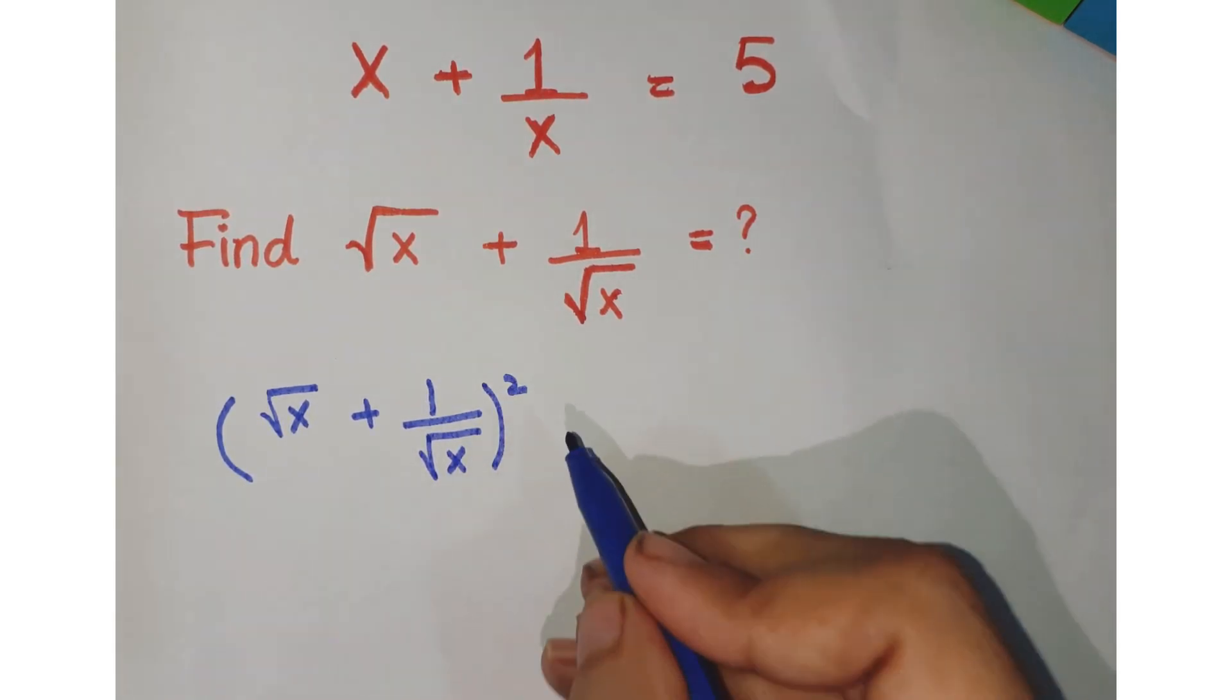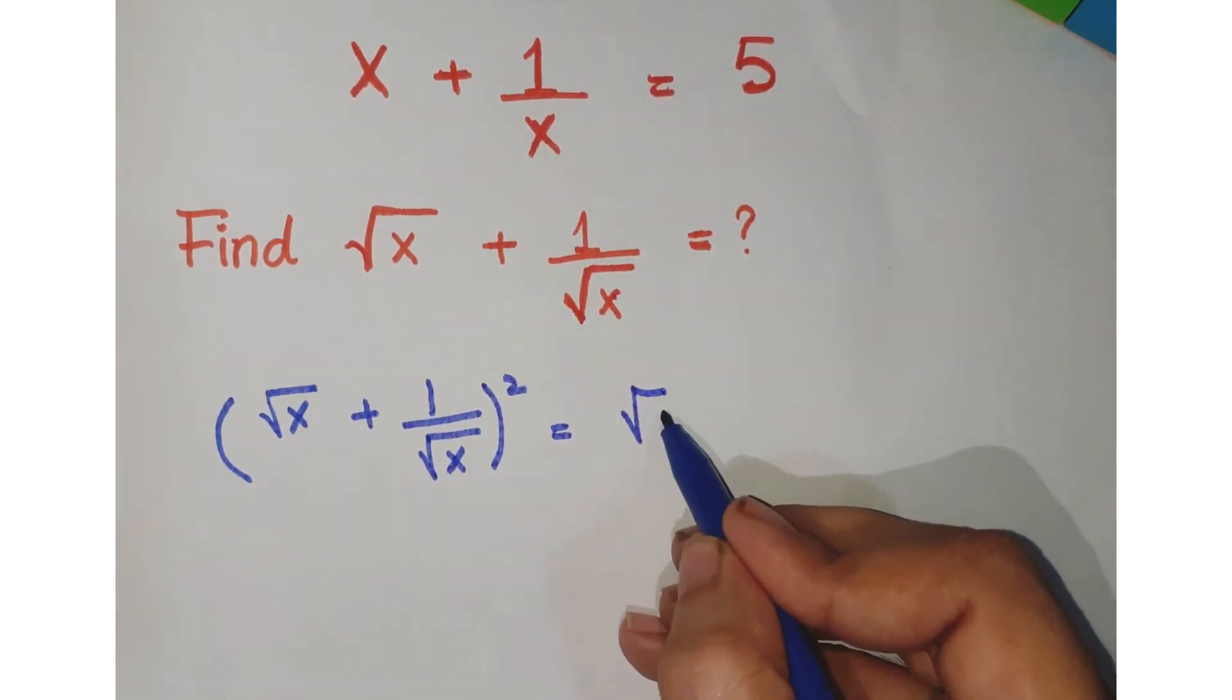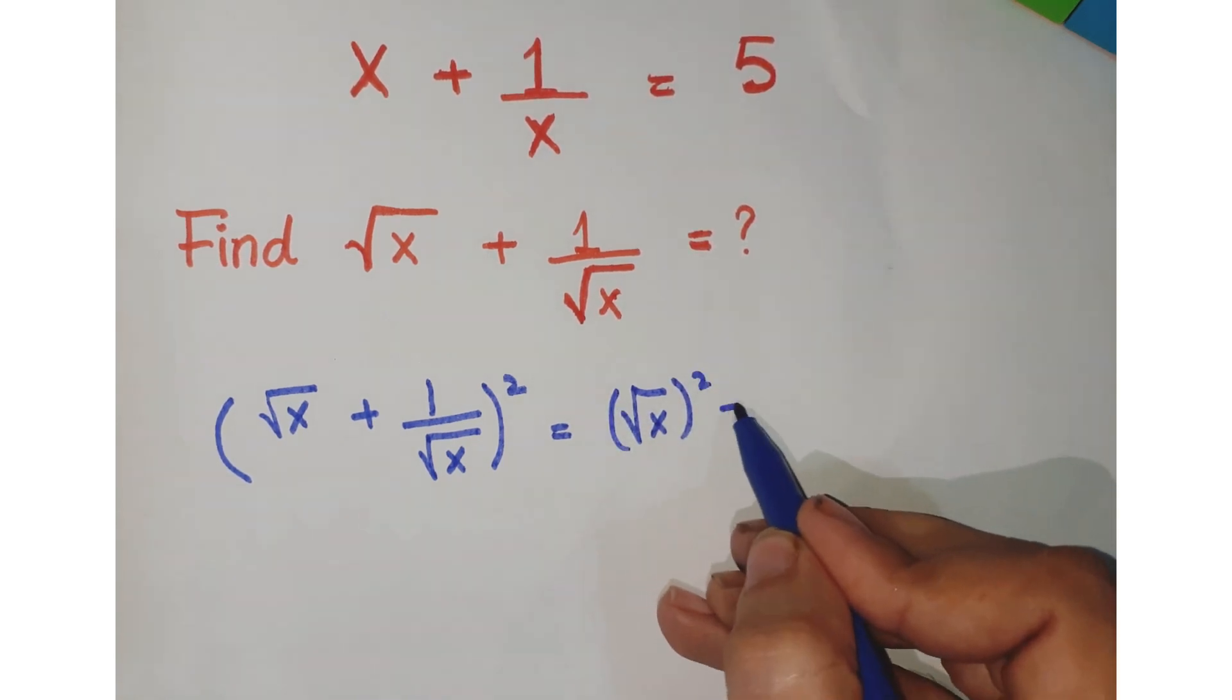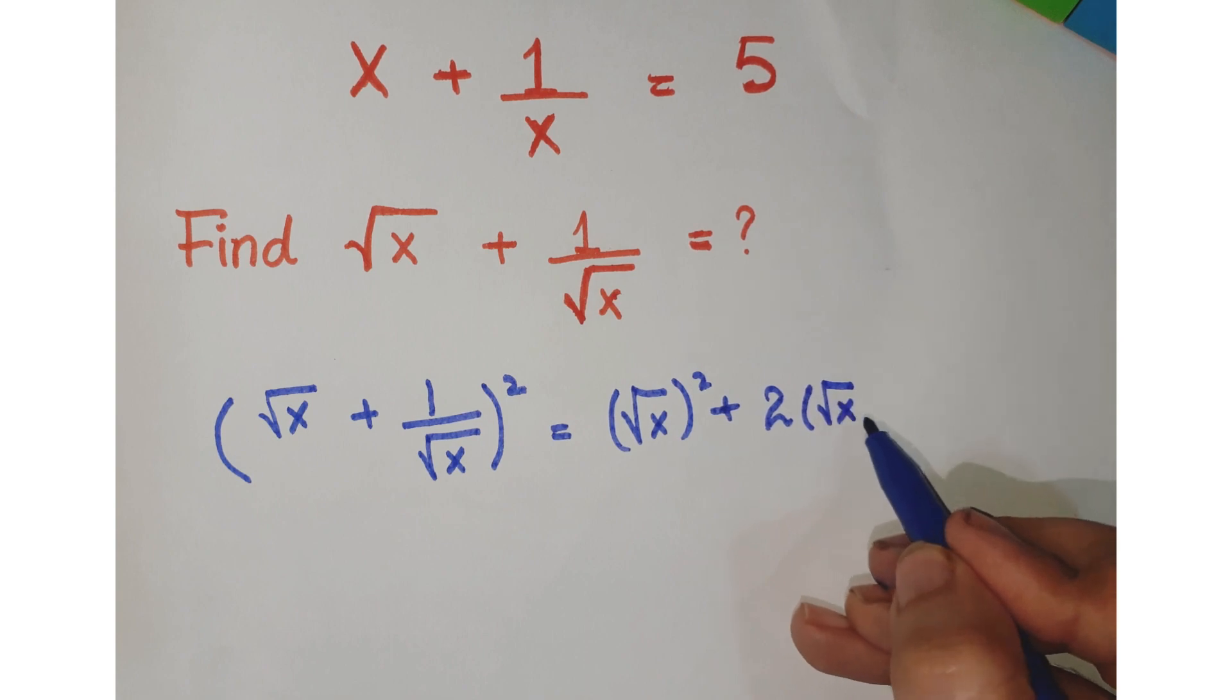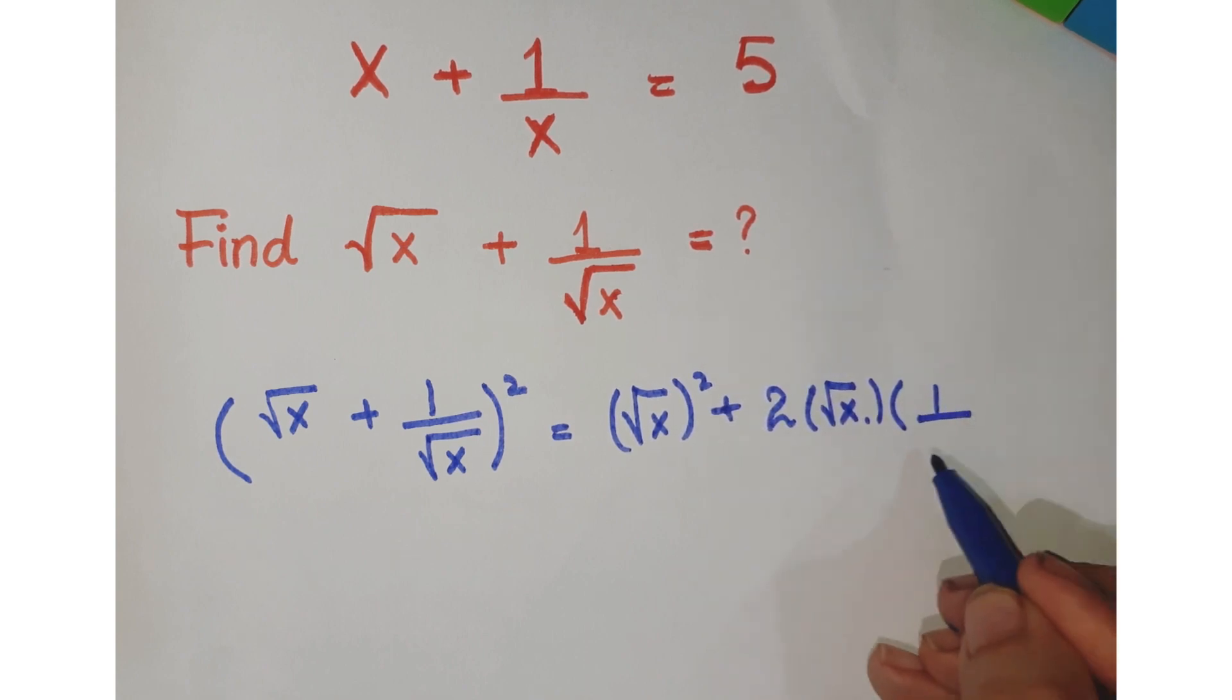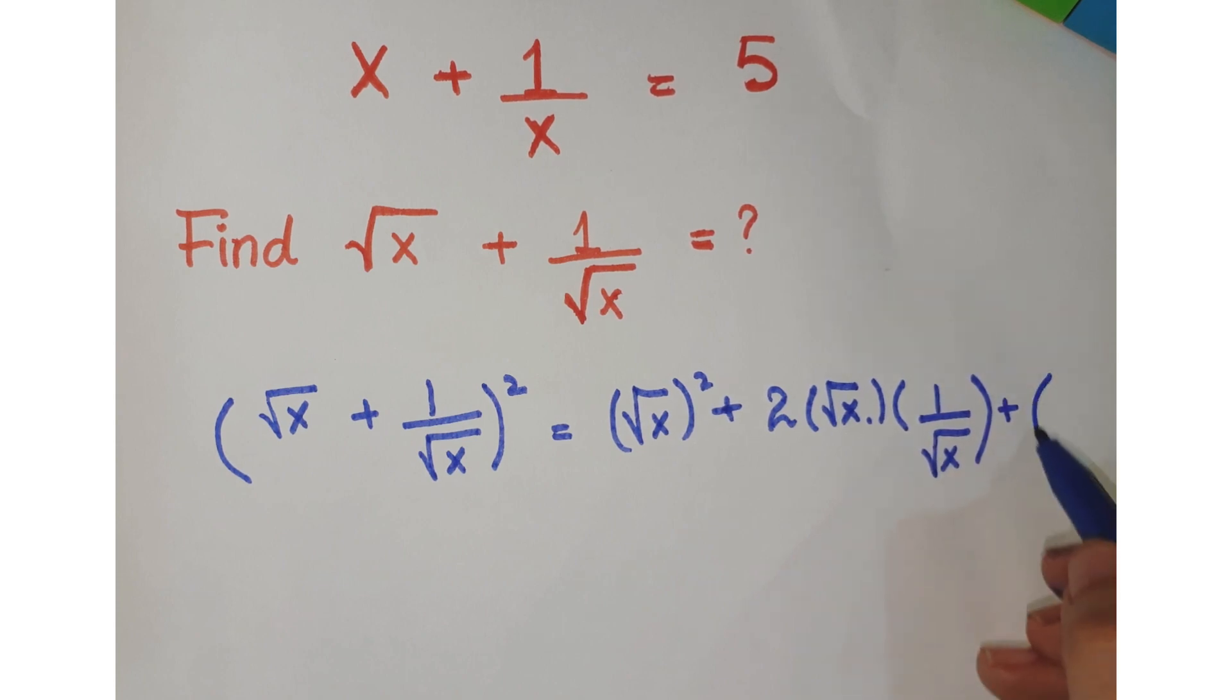So how do you expand this? You will expand it as a square, then plus 2 into the first term and then 1 upon square root x, that is the second term, plus 1 upon square root x square.